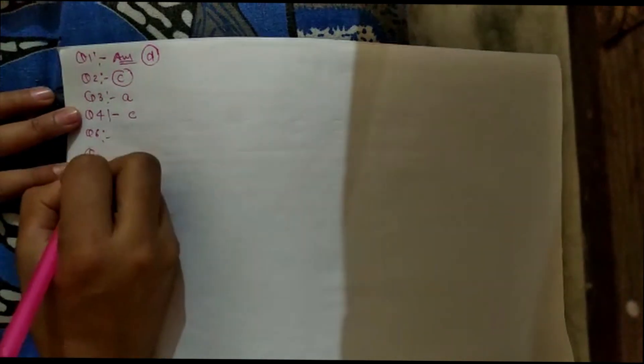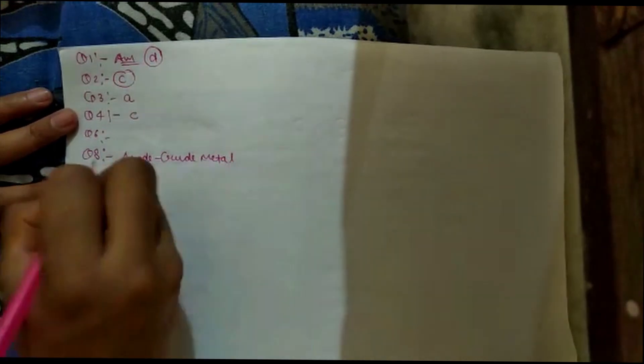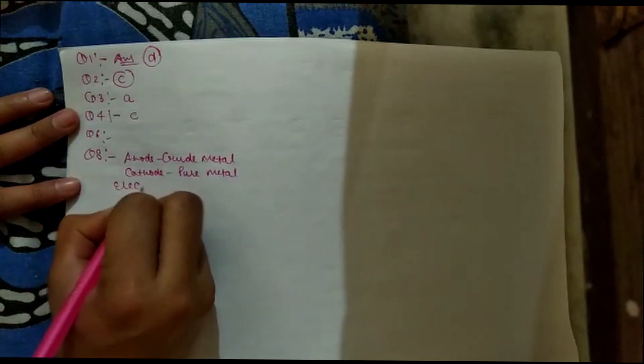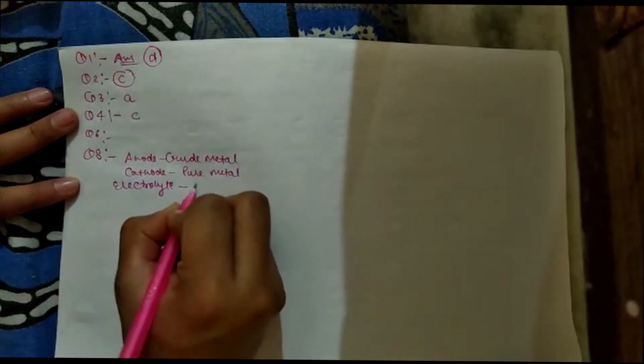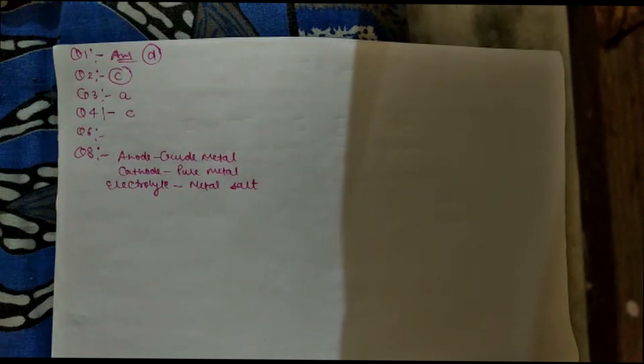Question 8: in the electrolytic refining of metal M, what would you take as anode, cathode, and electrolyte? For electrolytic refining of metal M, you would take impure metal as anode, pure metal as cathode, and salt solution of metal M as electrolyte.